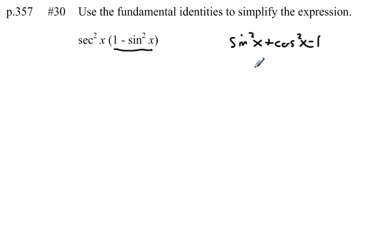If I subtract sine squared of x from both sides, I'll get an equation that looks like this: cosine squared of x equals 1 minus the sine squared of x.